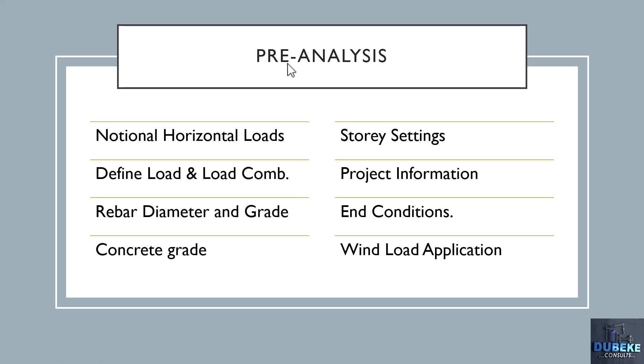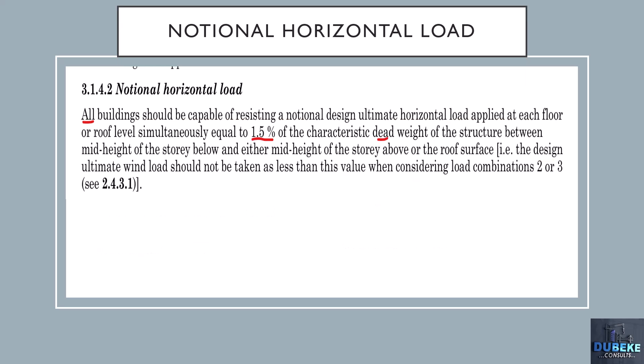At this pre-analysis phase we'll be touching these key parameters. We get to understand how you can apply your notional horizontal load to your structures, define the load cases and load combinations, do some important story and project information, and select the rebar diameter and concrete grade. We'll be kick-starting our pre-analysis with our notional horizontal loads. Because we are designing to BS 8110, it specifies that all buildings should be capable of resisting a notional ultimate horizontal load, assumed to be about 1.5% of our dead load.